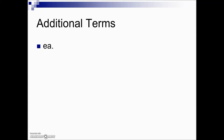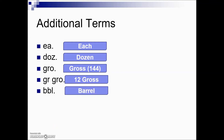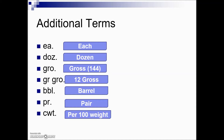Some additional terms and common abbreviations used on invoices: EA for each; DOZ for dozen (12 items); GRO for gross, which is a dozen dozen or 144 items; GRGRO for great gross, which is 12 gross or 12 times 144. BRL is the abbreviation for barrel; PR for pair, meaning a price per pair; and CWT, from the Roman numeral C for 100, meaning the charge is per 100 weight.